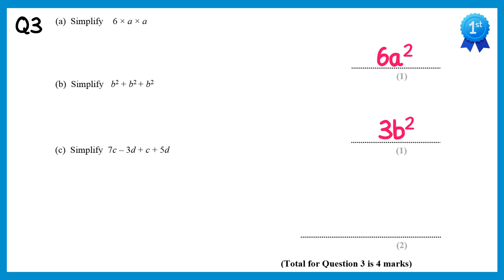For the next one we need to collect like terms. We have 7c plus c. 7c add 1c is 8c. We then have negative 3d add 5d. Negative 3 add 5 is 2, so it's plus 2d.